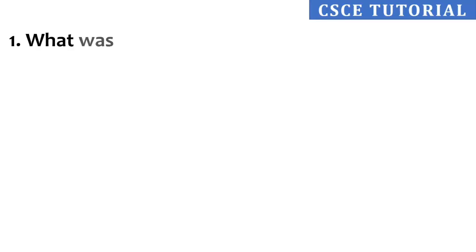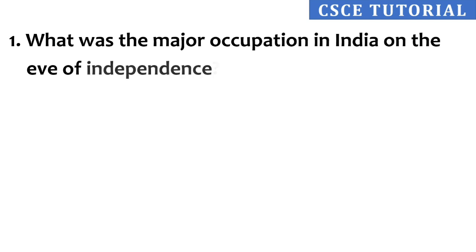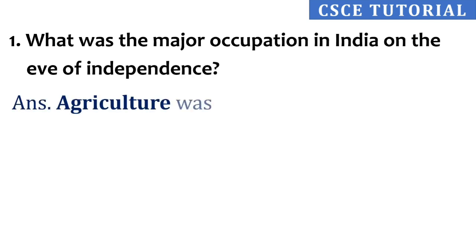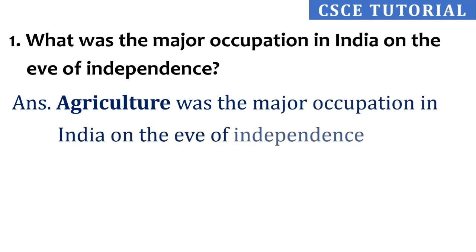First question: What was the major occupation in India on the eve of independence? Its answer is, agriculture was the major occupation in India on the eve of independence. The majority of people were working on the farm and farming.